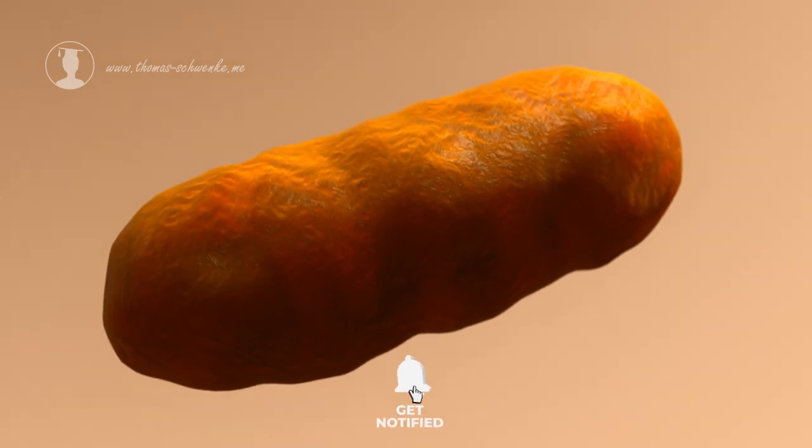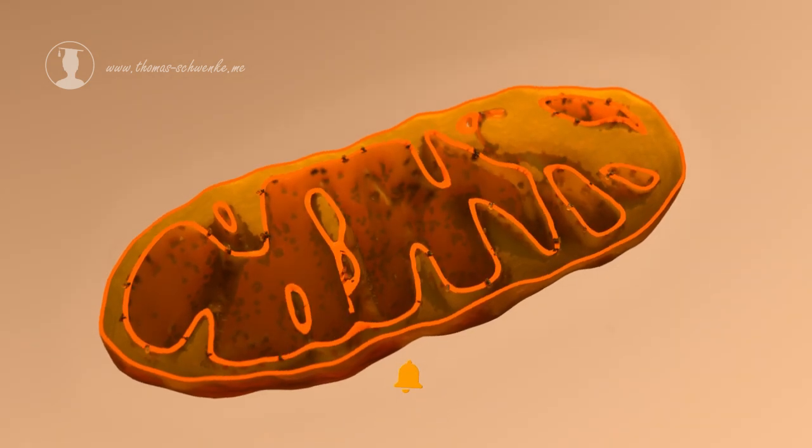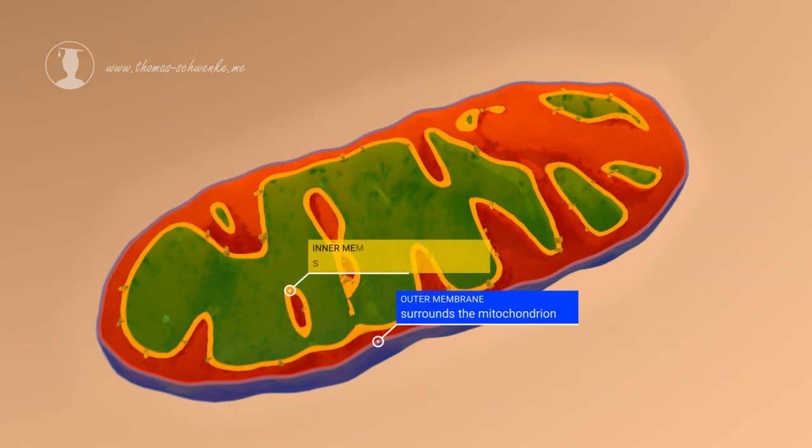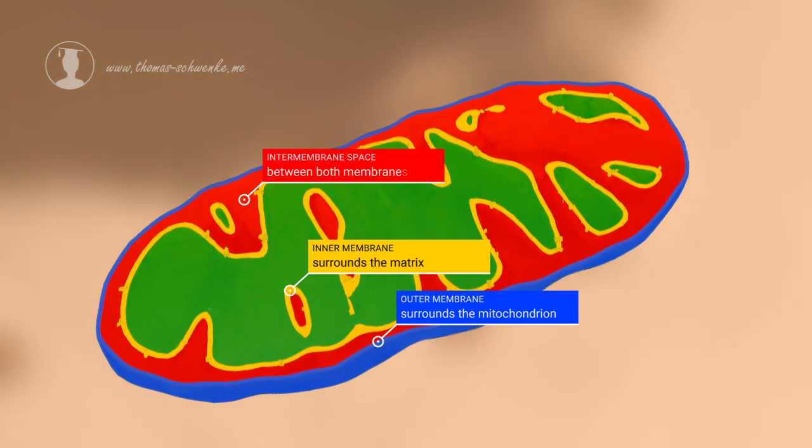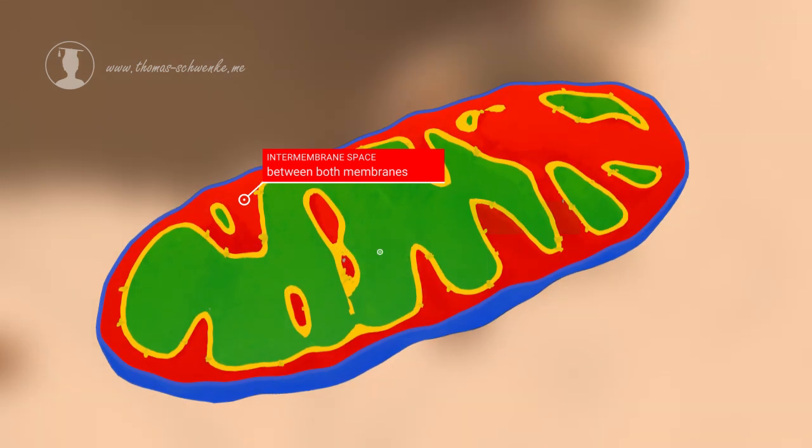The structure of mitochondria is always the same. Mitochondria have an outer and an inner membrane. The intermembrane space is located between the outer and the inner membrane. The matrix space is located deep inside the mitochondria.